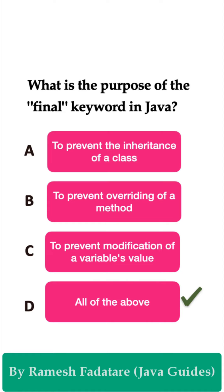The correct answer is Option D: all of the above. We use the final keyword to prevent the inheritance of a class — once we create a class with the final keyword, we cannot extend that class. We also use the final keyword to prevent the overriding of a method — once we create a method with the final keyword, we cannot override it in a subclass.